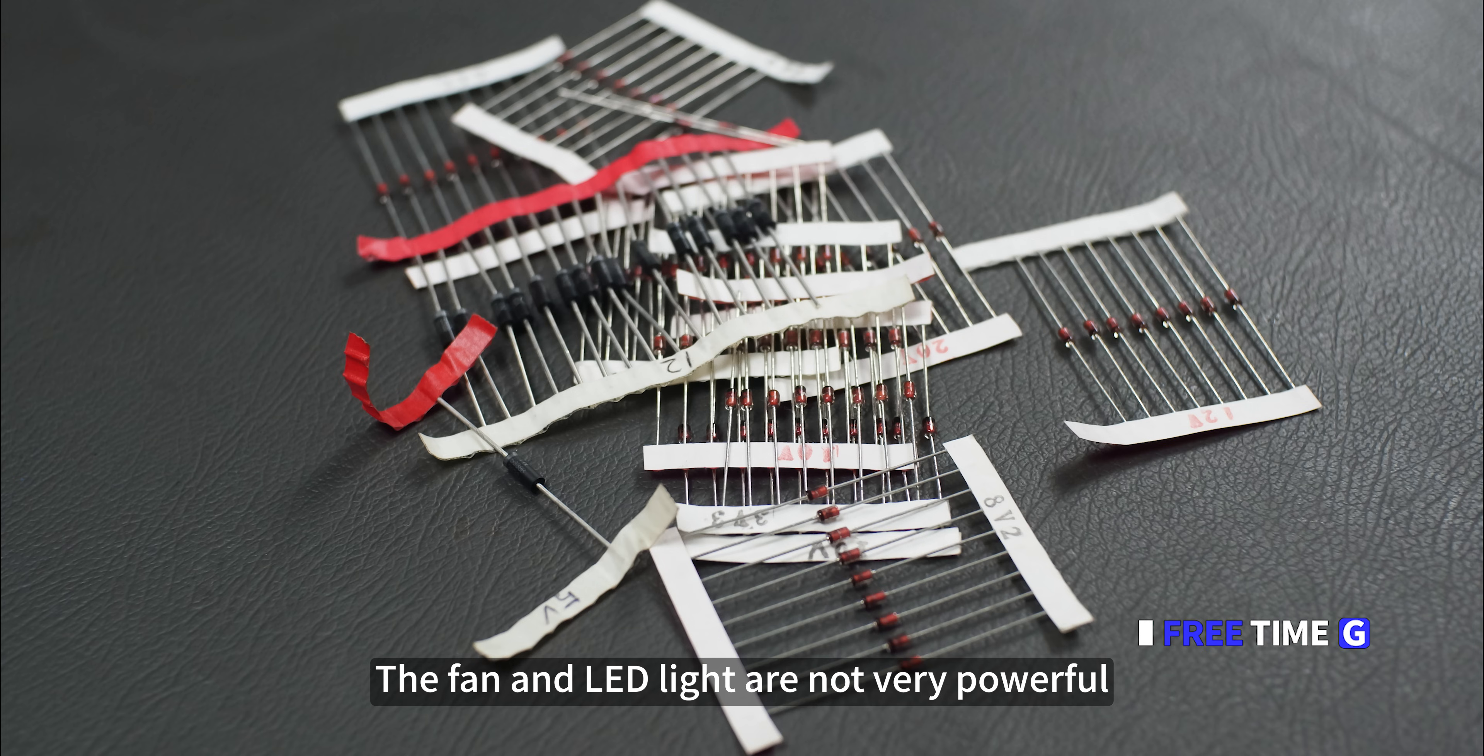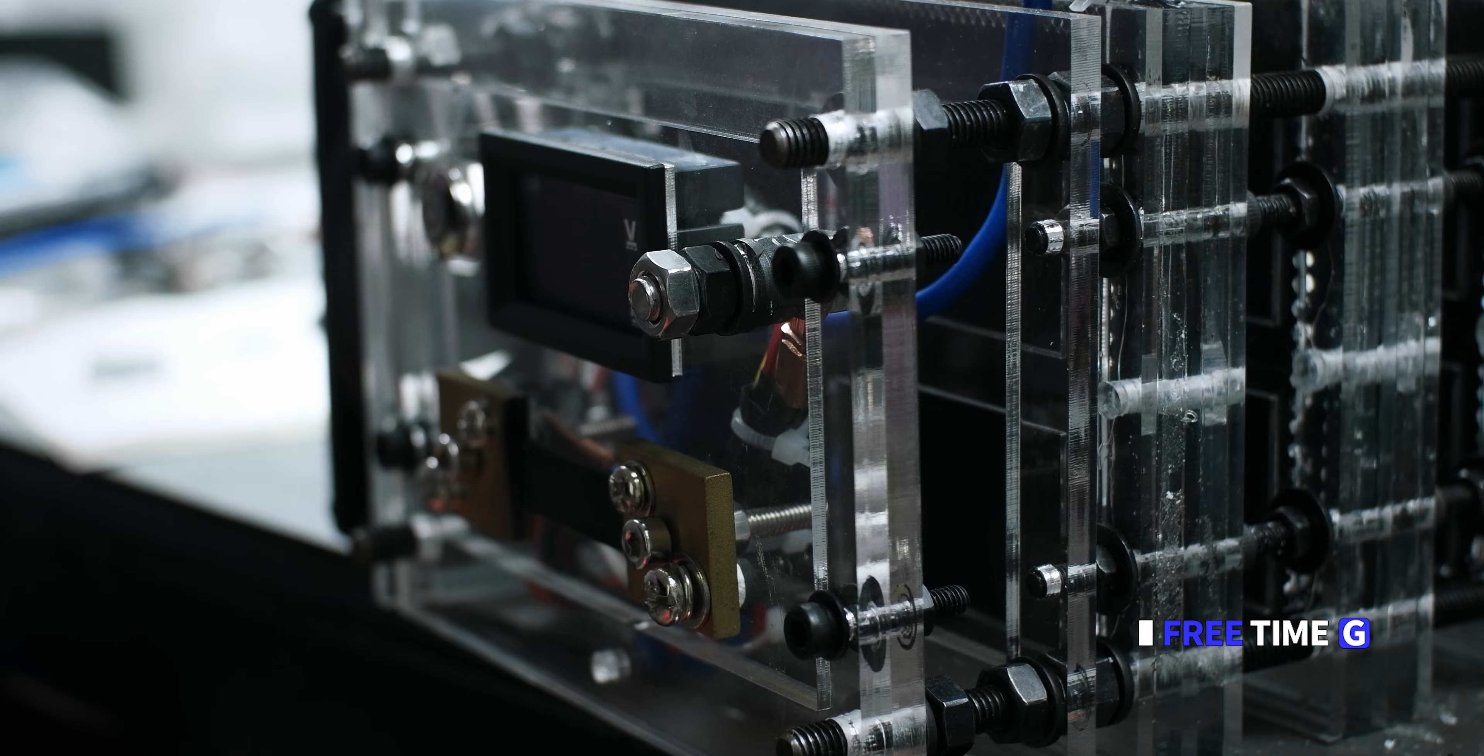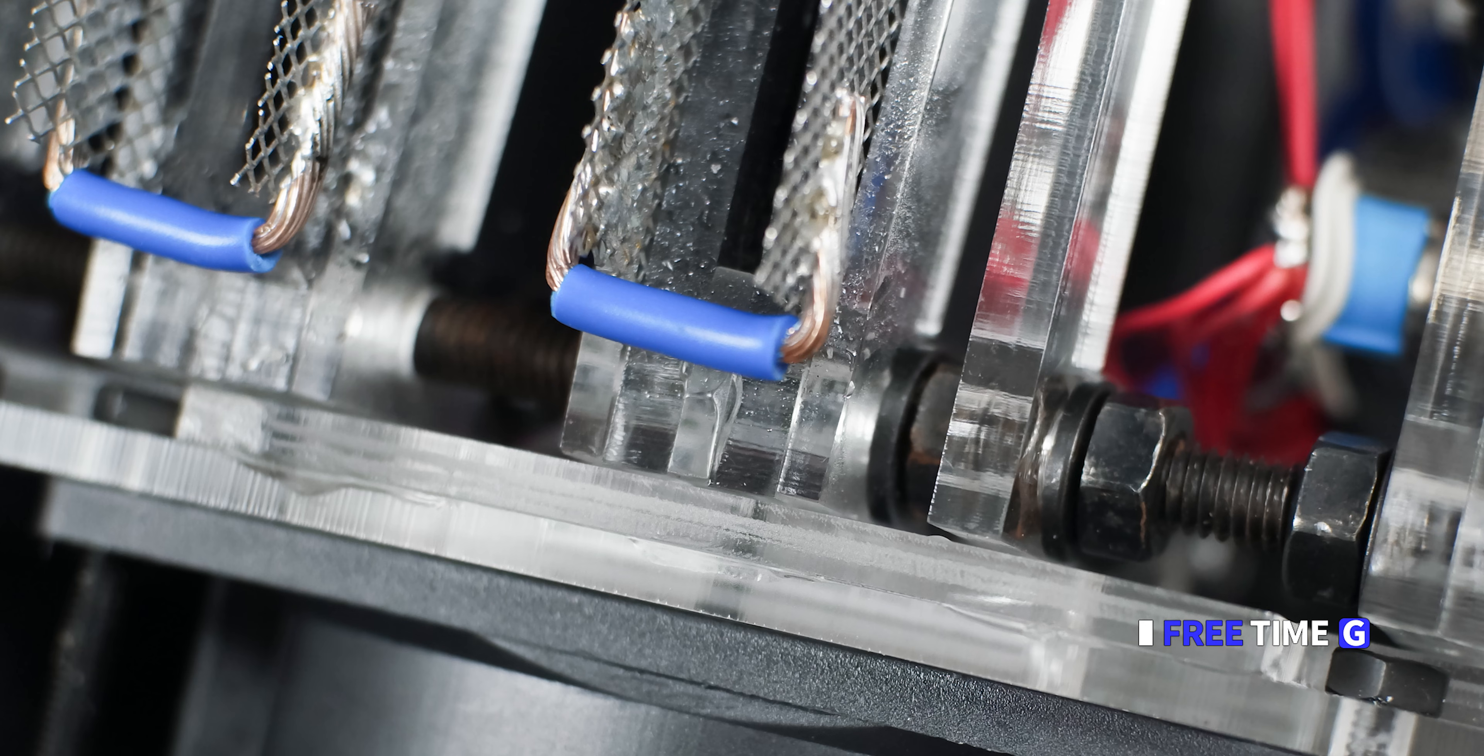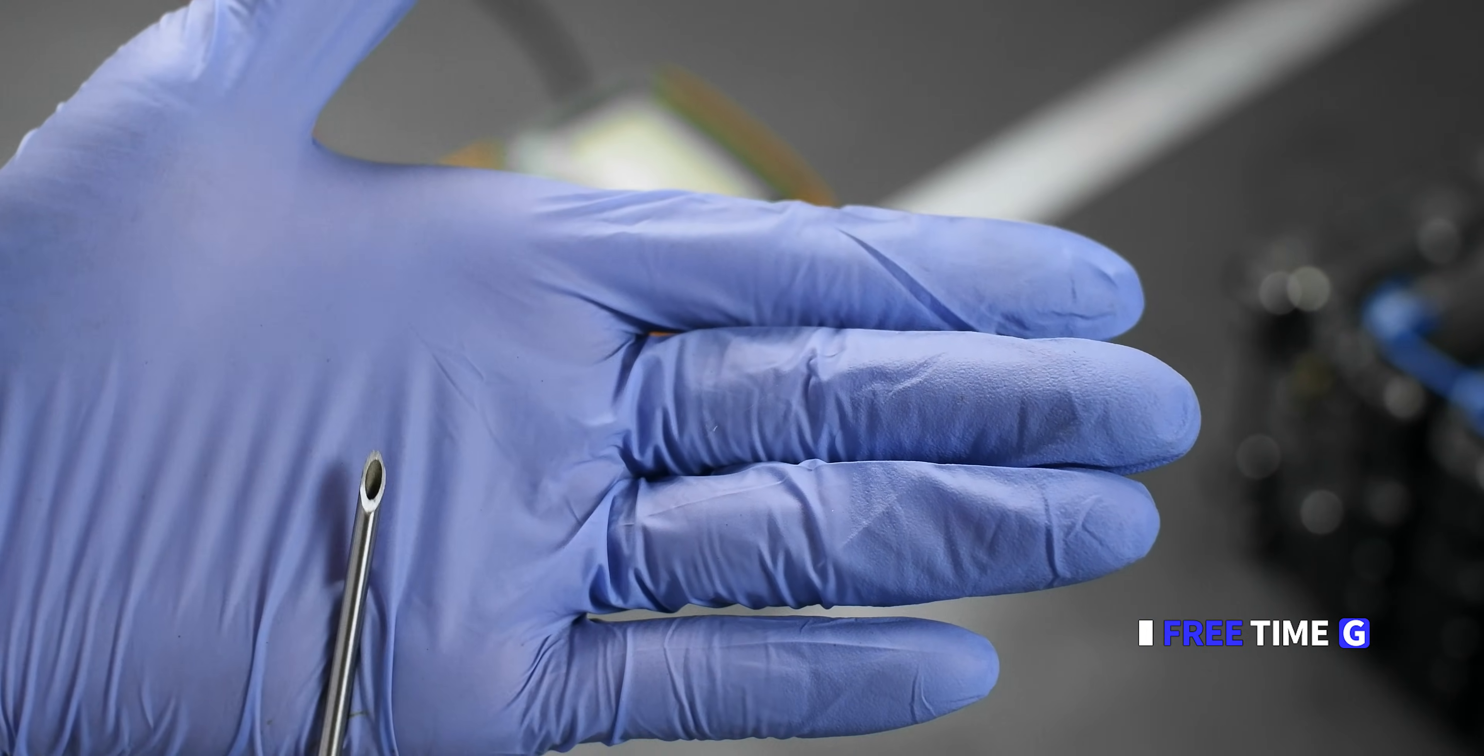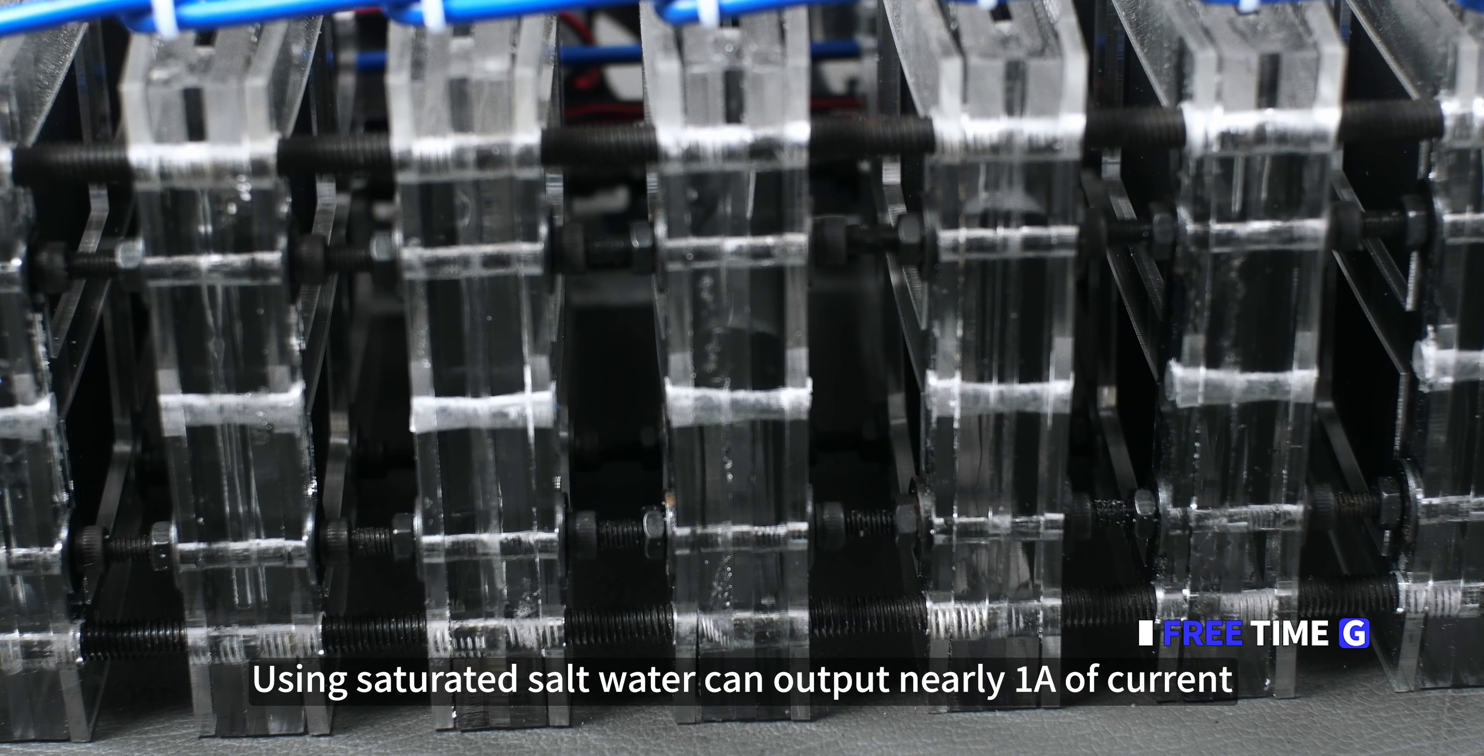The other fan and LED light are not very powerful. Use a voltage regulator diode to step down the voltage. Stainless steel soldering requires the use of flux. Now it's done. As long as the electrolyte is injected, electricity can be generated. Sodium hydroxide. Make a power bank, lighting or something. Just use salt water. Like this reaction tank, using saturated salt water can output nearly 1A of current. Longer lasting use.